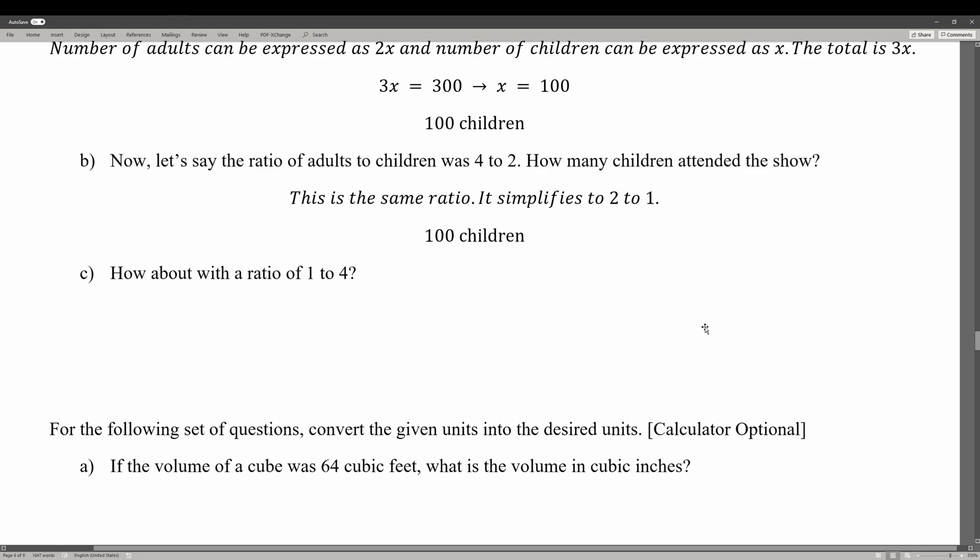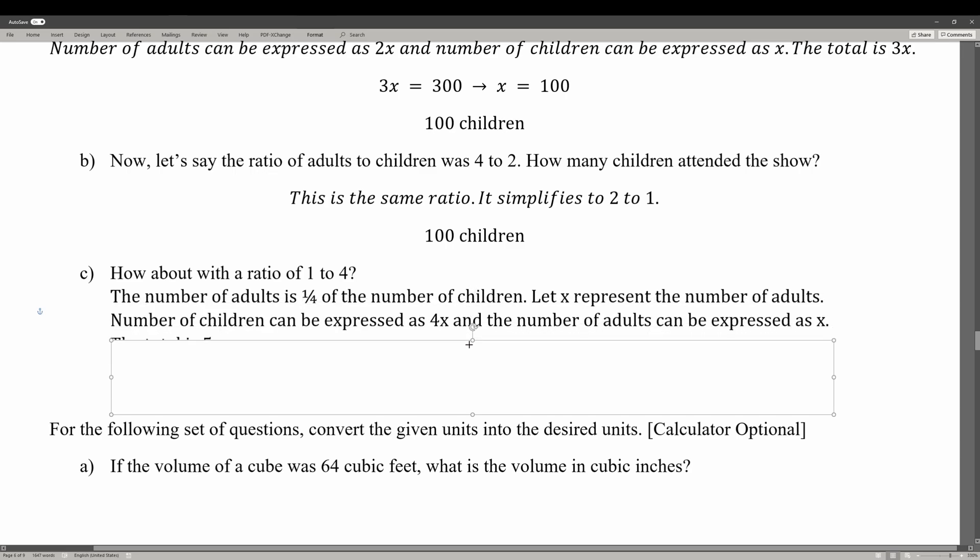How about with a ratio of 1 to 4? How many children attended the show? In this case, what we do is represent the number of adults, because it's the smaller one, with x. And we know that the number of children is 4 times as much as the number of adults, so we can represent that with 4x. Then we add those two together, 5x, and set it equal to the number of people that attended the show, which is 300. We get x equals 60 adults, then multiply that by 4 to get 240 children.